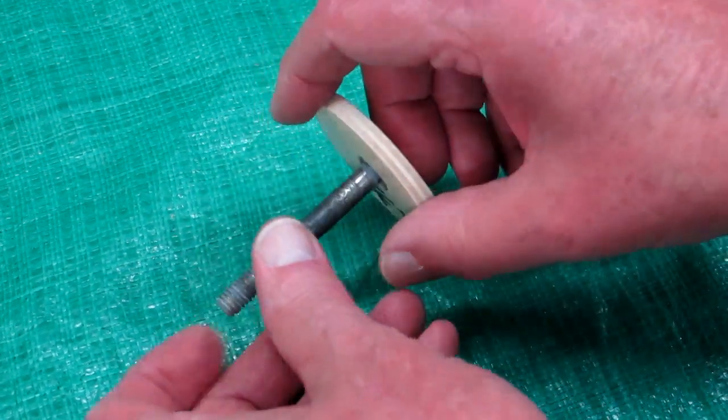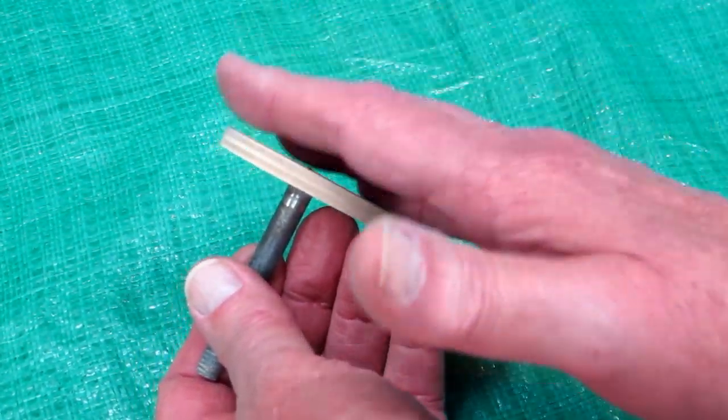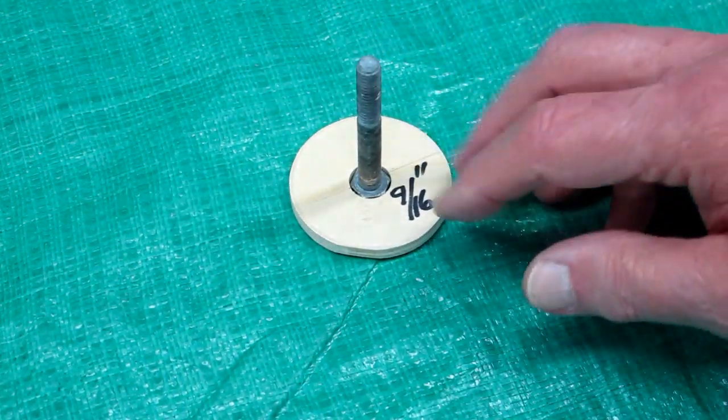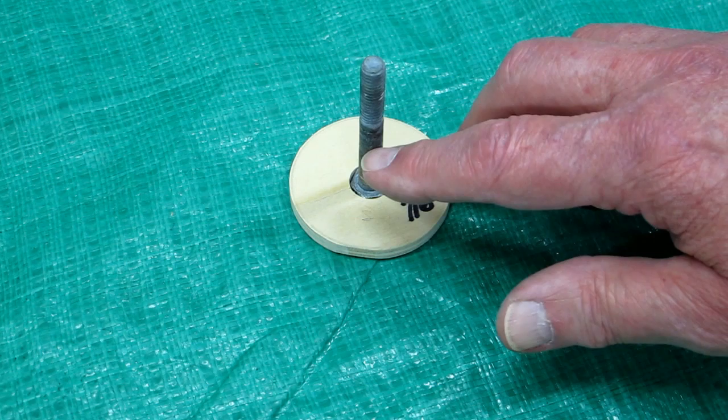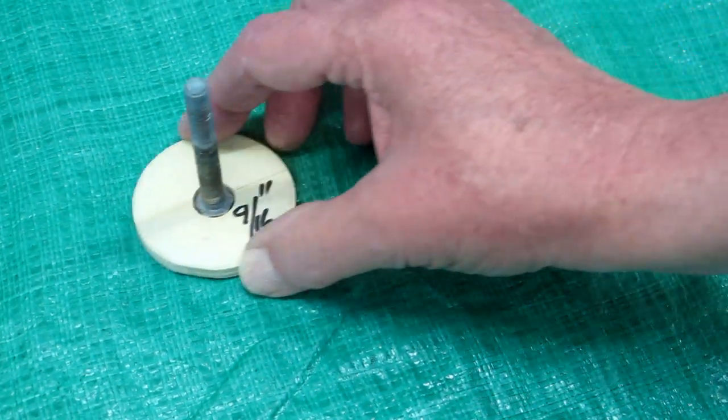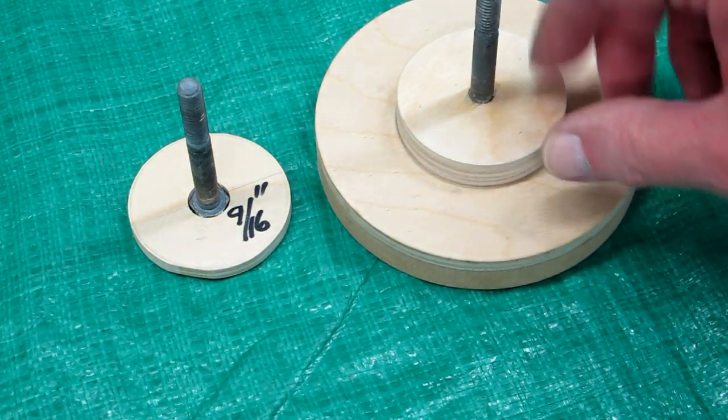The next day, sand this smooth and epoxy another piece of plywood on that flat, and a third piece with a 5/16 hole in it. Push down over that, and you'll end up with a sandwich like this.